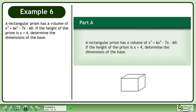A rectangular prism has a volume of x cubed plus 6x squared minus 7x minus 60. If the height of the prism is x plus 4, determine the dimensions of the base.